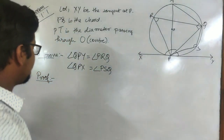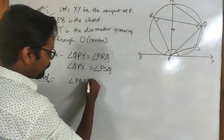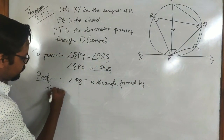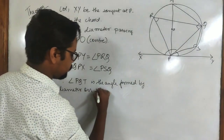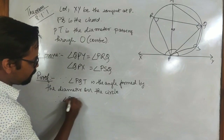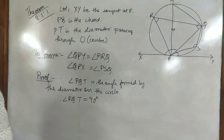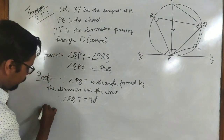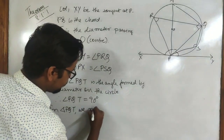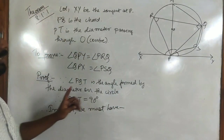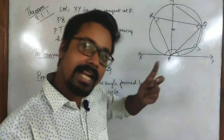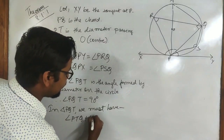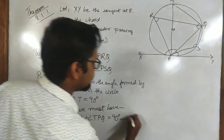Since angle PQT is the angle formed by the diameter on the circle, angle PQT = 90°. Now in triangle PQT, since one angle is 90°, the sum of the other two angles must also equal 90°. Therefore, angle PTQ + angle TPQ = 90°. Let this be equation (1).